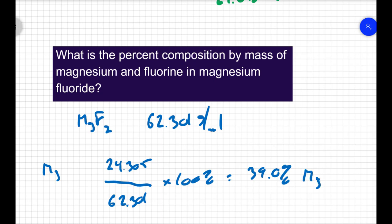Now I could do the same thing, take the mass of the fluorines, two fluorines, and divide it by the total, or, like before, I know the compound just has magnesium and fluorine, so if it's 39% magnesium, it has to be 61% fluorine.